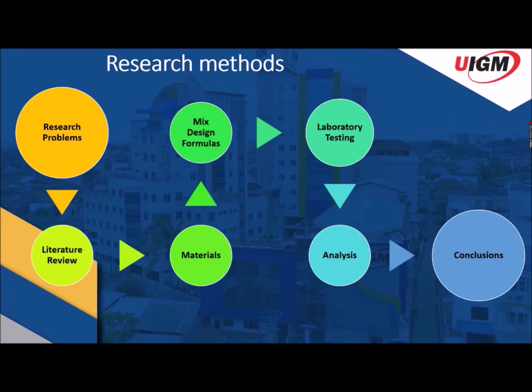Research method: the first step is identifying the research problem, then conducting a literature review. Next is determining materials, followed by the mix design formula and laboratory testing. Then comes analysis of the results of laboratory testing, and finally the conclusion.